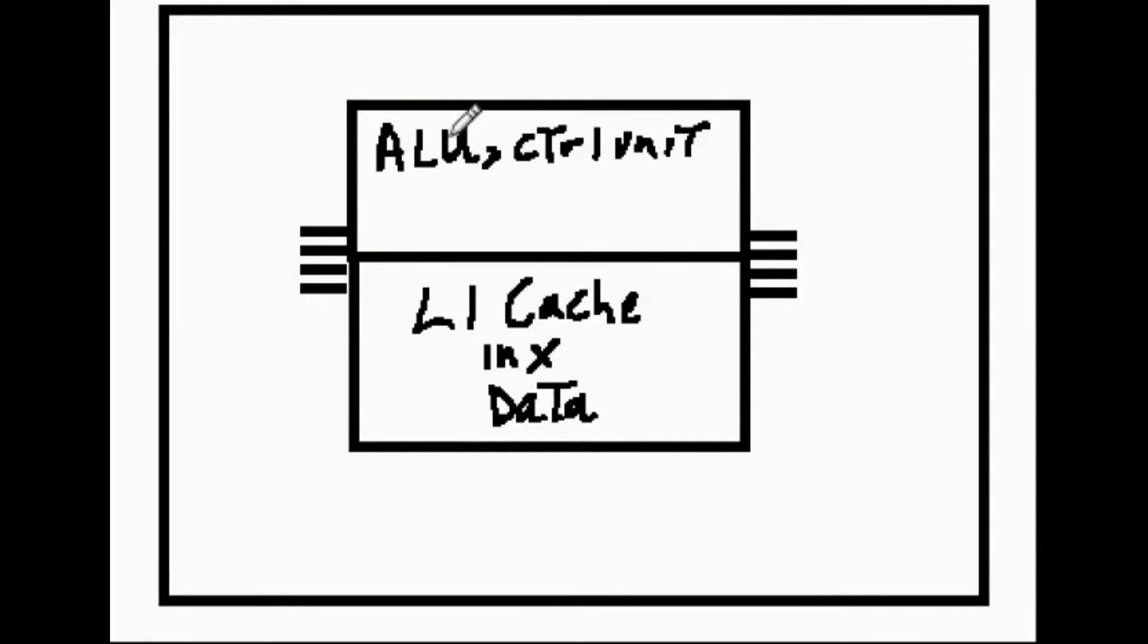Here is your CPU unit. It's got the ALU, control unit, all bunched up together here, and directly connected to it is an L1 cache. There's an L1 cache for instructions and there's an L1 cache for data.